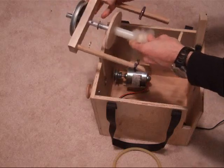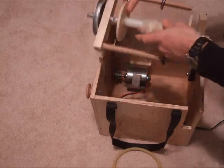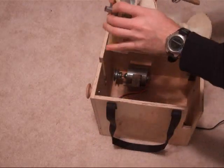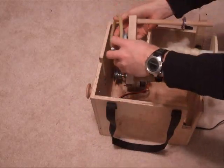First you put the bobbin on the flyer like that. Then you take the belt and you place it here on the larger pulley.